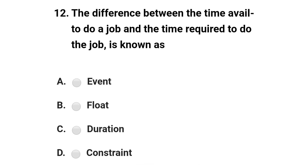Next question: the difference between the time available to do the job and the time required to do the job is known as — option A: event; option B: float; option C: duration; option D: constraint. The correct answer is option B: float.